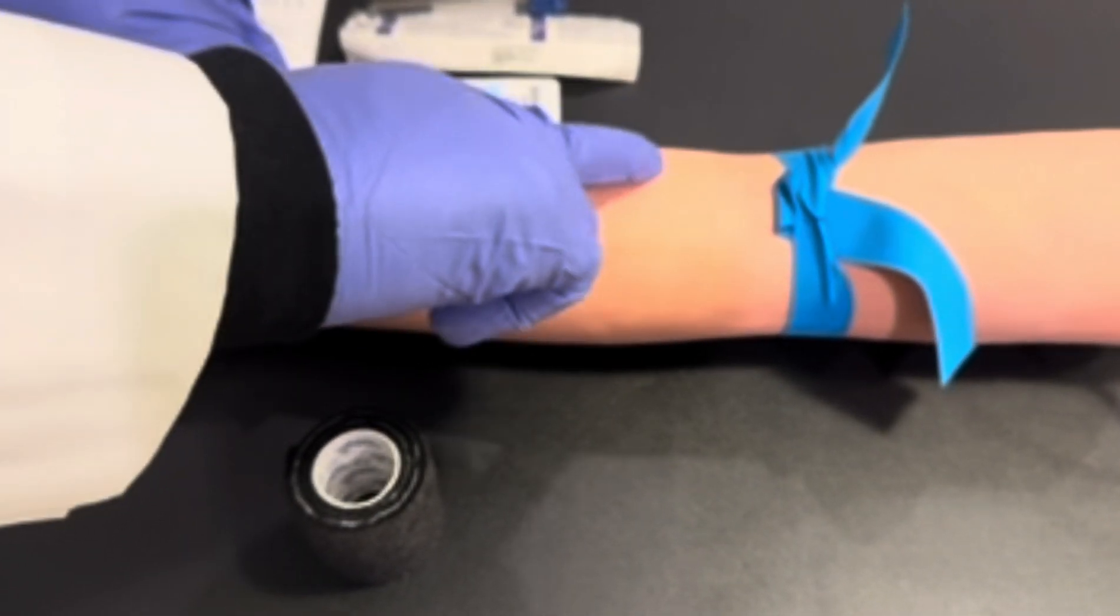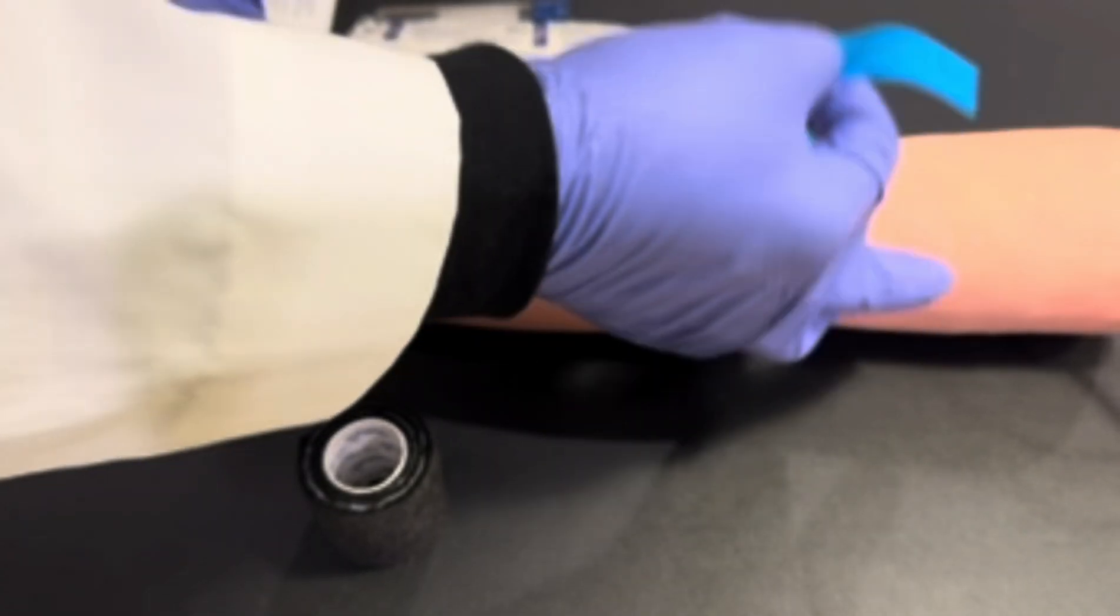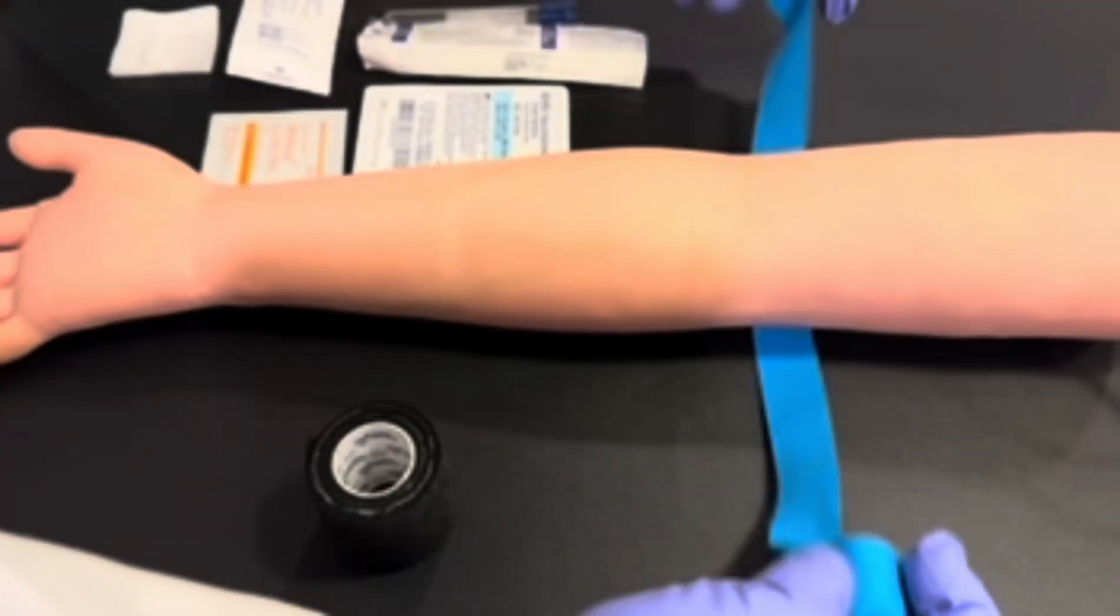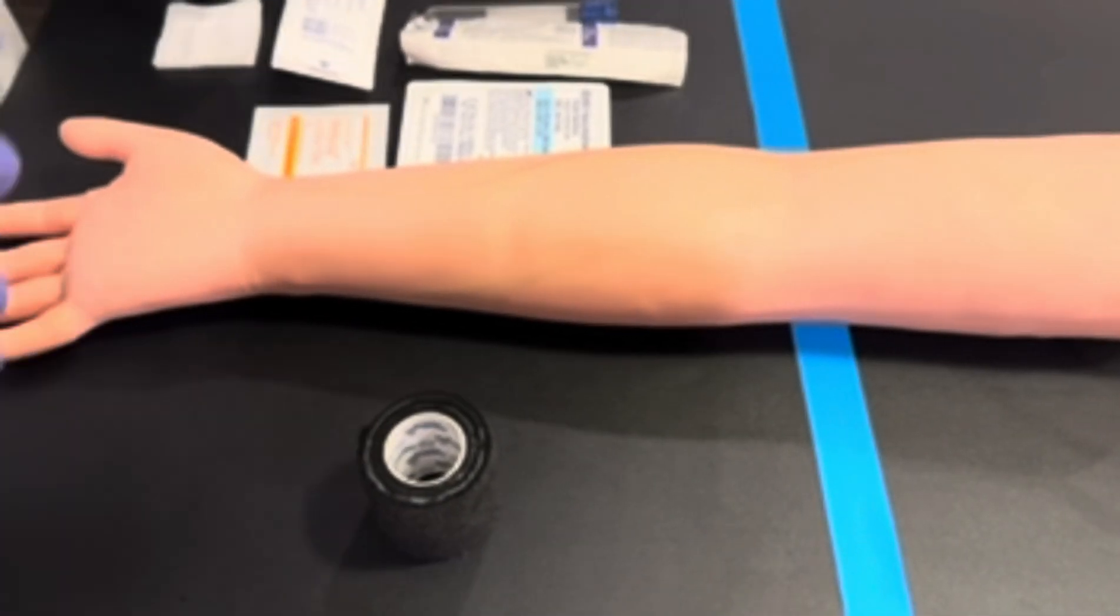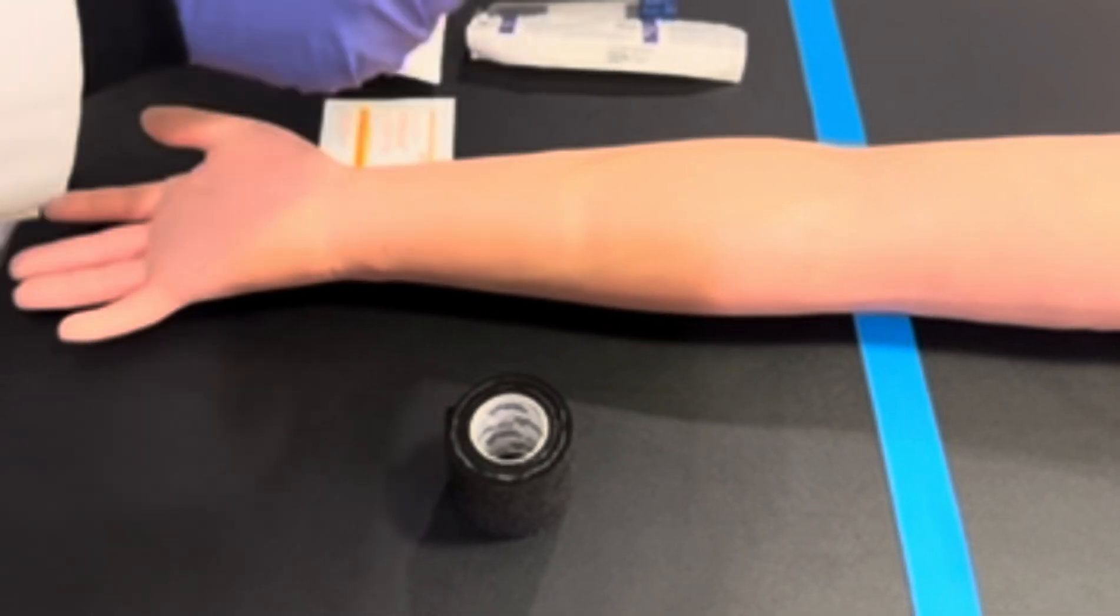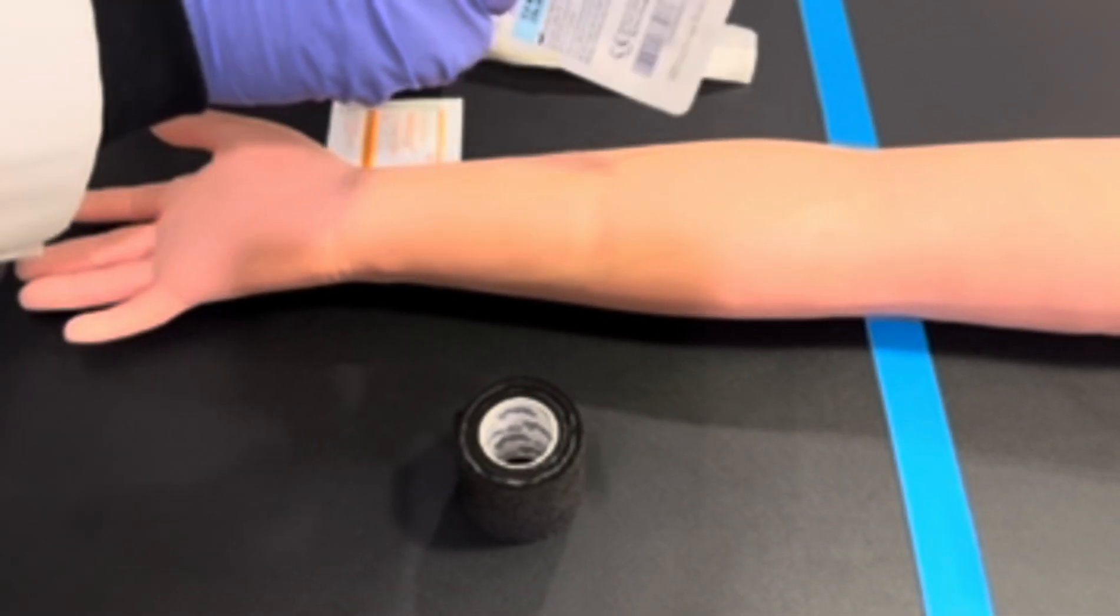First, apply your tourniquet three to four inches above the site of incision. We're using the antecubital fossa, and we've located the median cubital vein.